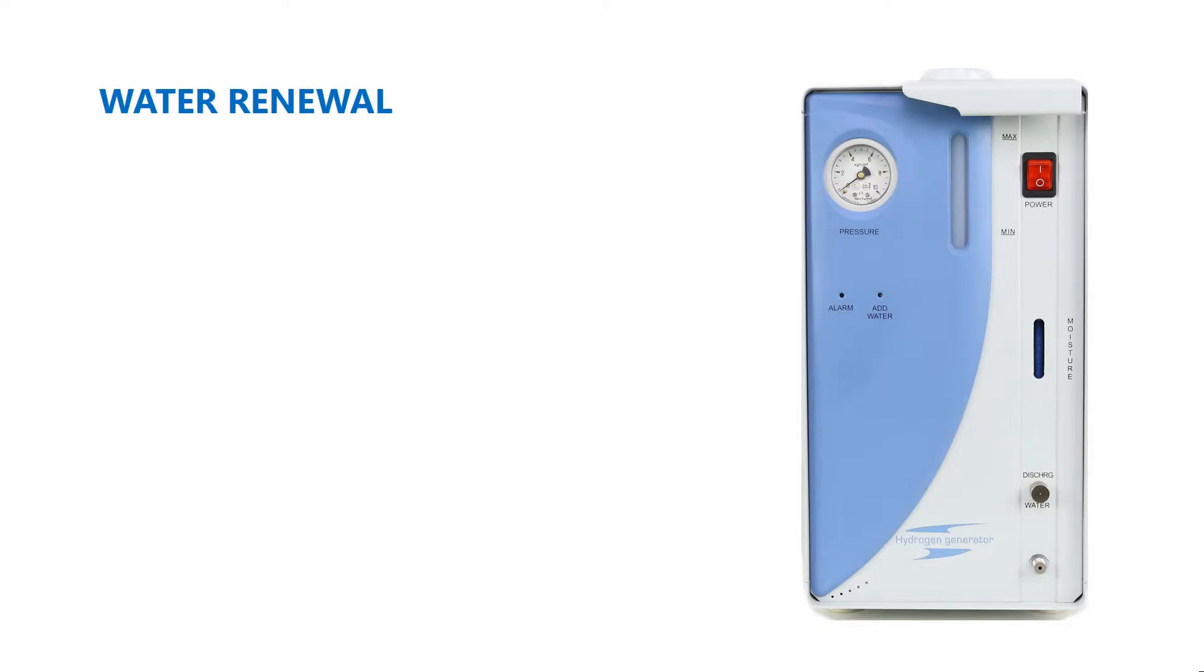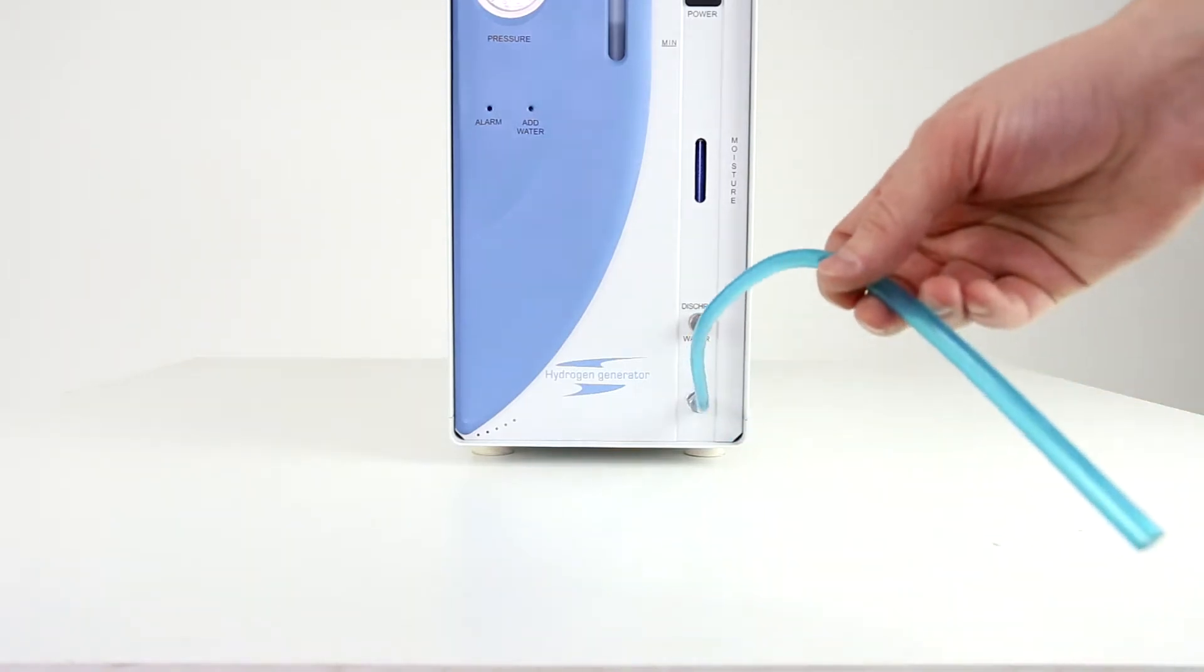Water renewal: Frequency once a week, and on the occasion of long breaks in work, more than a week. To easily drain water, use the tube supplied with the generator. Prepare a container to drain water and screw the drain valve. Drain all water. Tighten the drain valve.